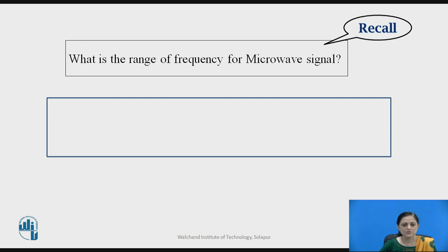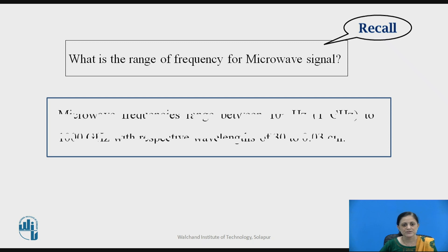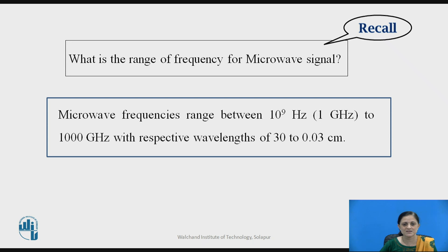Microwave signals are very high frequency signals, with a range in terms of gigahertz — that is 10 to the power 9 — starting from 1 gigahertz to thousands of gigahertz. The frequency and wavelength relationship is f = c / λ, meaning wavelength and frequency are inversely proportional. At high frequencies, the wavelength is very small — in terms of centimeters or micrometers — ranging from 30 to 0.03 centimeters. Therefore these waves are called microwaves.